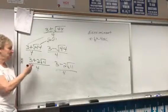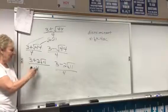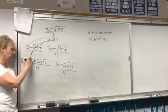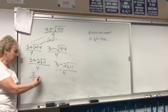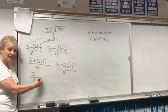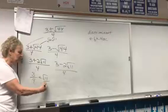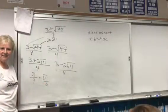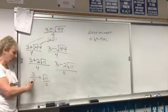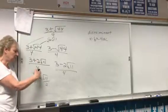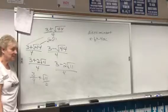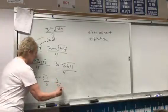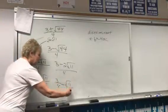Now, you might see it as 3 fourths plus radical 11 over 2. You see what I did? I divided 3 by 4, and I divided 2 fourths and got 1 half. You might see that. And that would be 3 fourths minus radical 11 over 2.